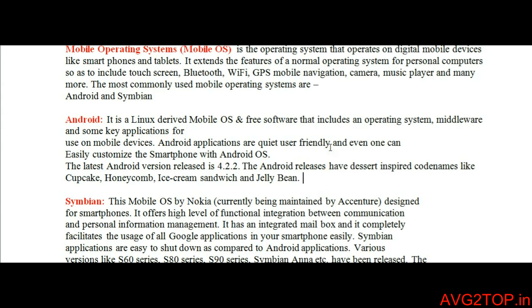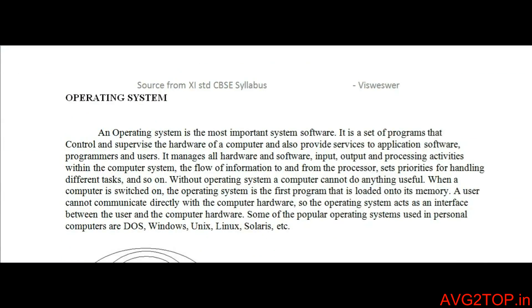Both Android and Symbian interact with the hardware parts of your mobile phone — such as touch screen, Bluetooth, Wi-Fi, GPS, mobile navigation, and camera. These hardware components cannot be accessed directly; they need a medium to communicate between the user and the hardware. That is why Android, Symbian, and other software like Java support mobile operating systems.